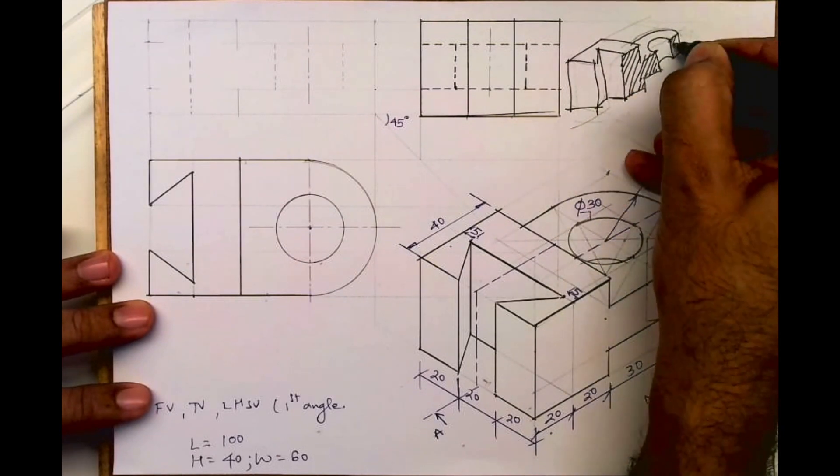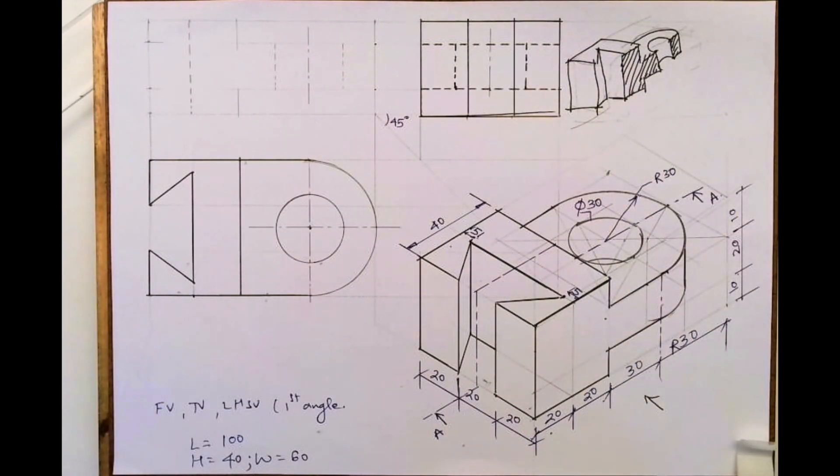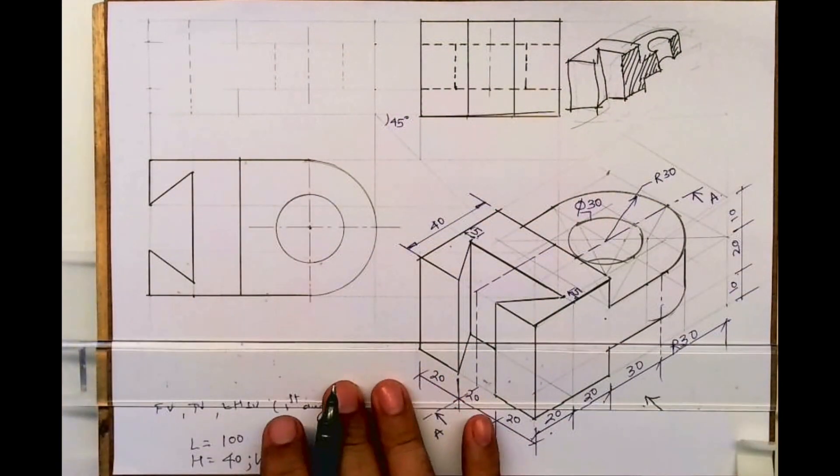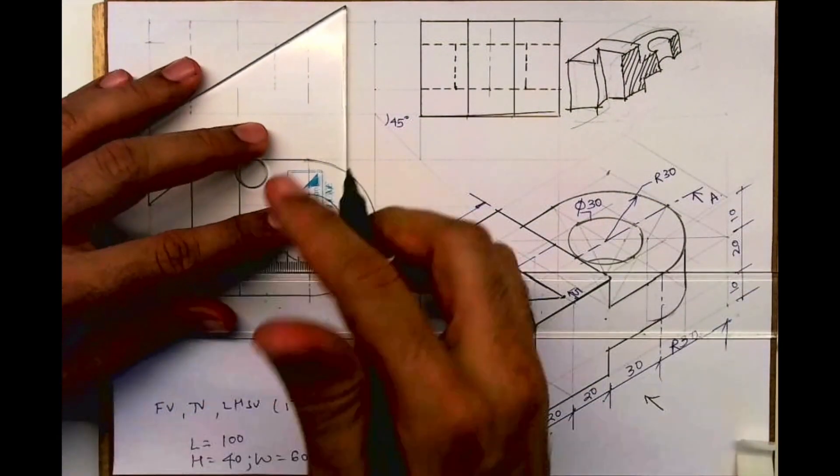This will be hatched. This way it will come. So what I need to do, I need to draw those two dotted lines will become dark. Because now you can see.